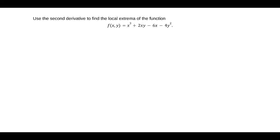Use the second derivative to find the local extrema of the function f of x comma y equal to x cubed plus 2xy minus 6x minus 4y squared.